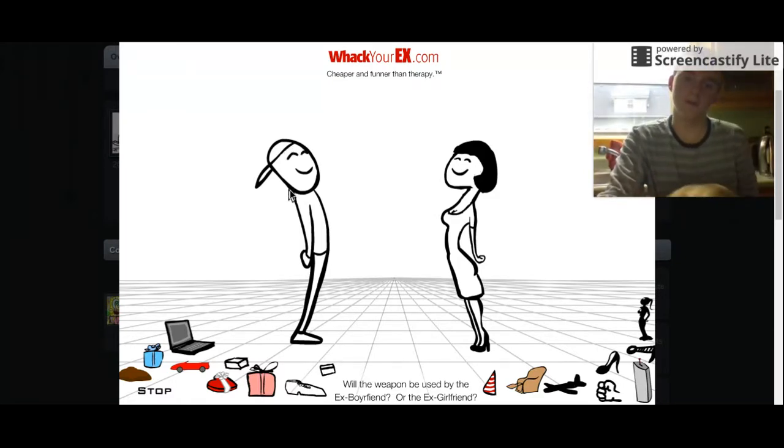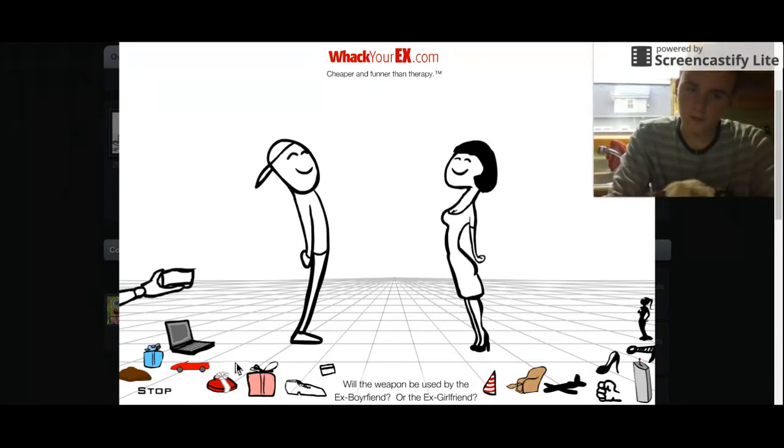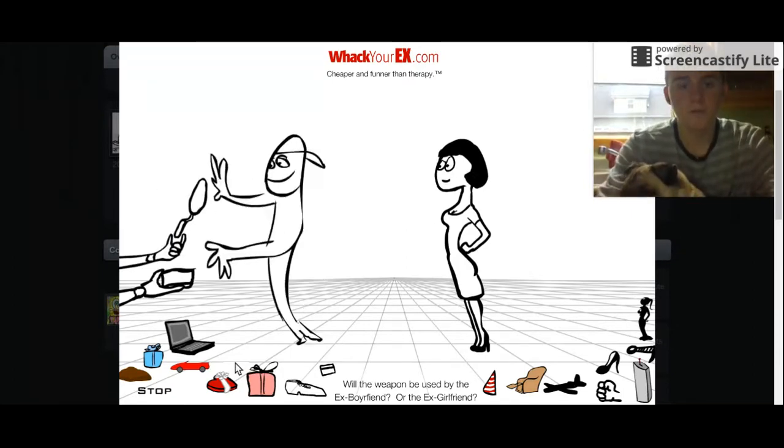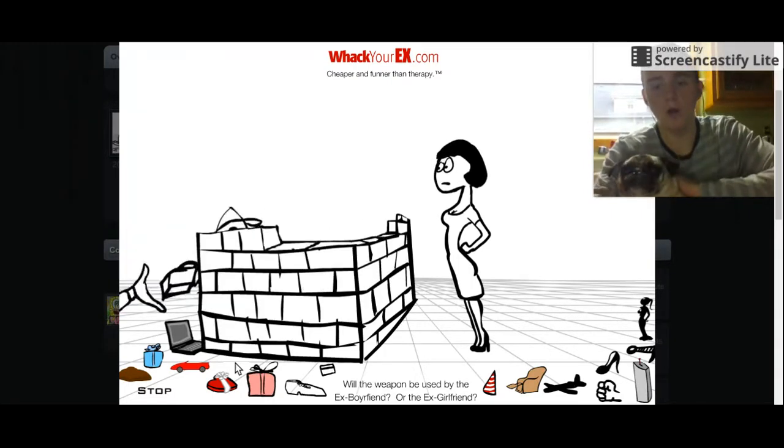Alright, sorry about that. So we did the computer, we did the present. You're kidding me. Alright, so we got a little box that appears. Oh that's a brick. Alright, what are we gonna do? Oh, it's Donald Trump, he's building the wall, guys.